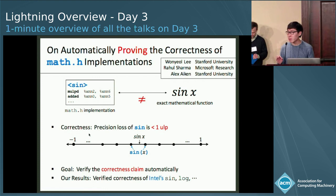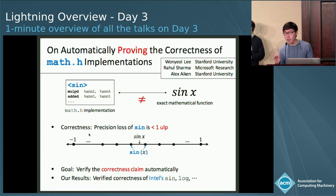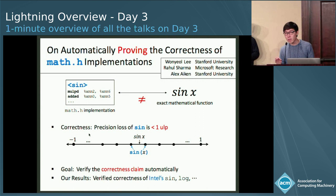Let's consider the sine function as an example. Since sine is a transcendental function, any floating point implementation cannot compute the mathematically exact result and must have some amount of precision loss. However, many implementations of the math.h library claim that such precision loss is actually very small, in the sense that the implementation mostly returns one of the two nearest floating point numbers to the exact result. In our work, we automatically prove such correctness claims about the math.h library. The key technical idea is to improve static floating point abstractions by solving mathematical optimization problems. Our analysis is at least an order of magnitude more precise than previous work. Please come to my talk in the morning session at Bunker Hill.